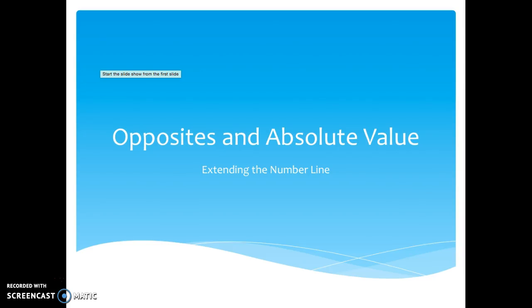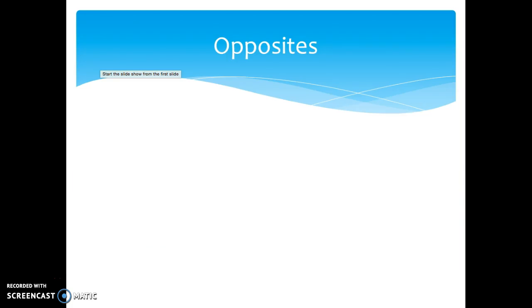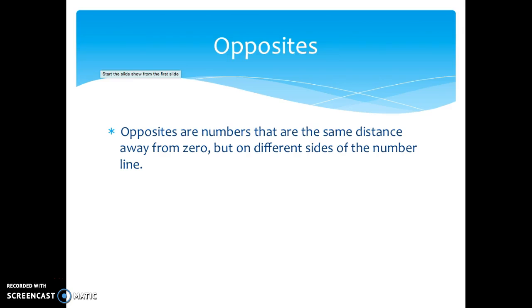This lesson will focus on opposites and absolute value and just looking at the number line to extend those ideas. So opposites are numbers that are the same distance away from zero but they're on different sides of the number line.